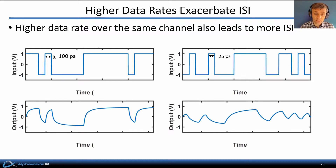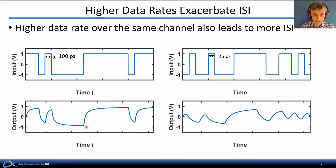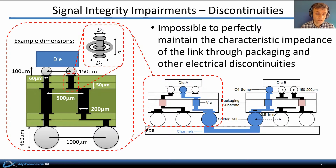Moreover, higher data rates over the same channel have a very similar effect, because you'll then see a higher Nyquist frequency and therefore more loss at Nyquist and hence more ISI. For example, here's what the response of a channel looks like at a symbol interval of 100 picoseconds — you can still clearly see the ones and zeros at the received end. But if we increase the data rate so the unit interval shrinks by a factor of four, the ones and zeros start smearing together and it becomes harder to distinguish them, especially with noise added on top.